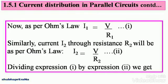Now, as per Ohm's law, I1, that's the current flowing through resistance R1, is equal to V divided by R1. Take that as equation 1.